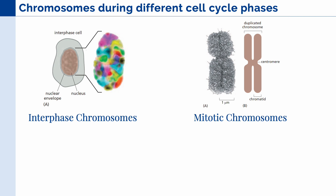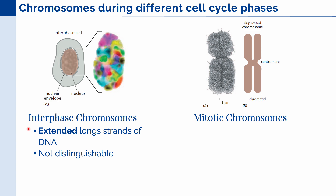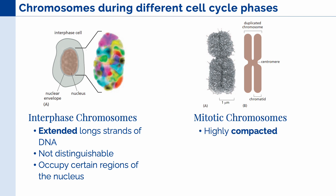Now, in interphase and anaphase, the chromosome can take on different forms. We have interphase chromosomes and mitotic chromosomes. These are actually the same DNA sequences, but they are packaged differently. First, we have the interphase chromosomes, which are extended long strands of DNA, and they are not distinguishable using the microscope. But we know that these different DNAs occupy certain regions of the nucleus, and we can see that in this figure, where the different regions are color-coded. Meanwhile, in mitotic chromosomes, these are highly compacted and easily visualized using the microscope.